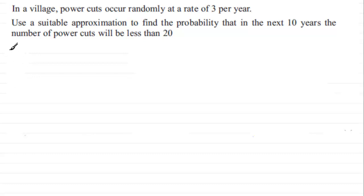Well the first thing I'd want to do is to describe the random variable, say x. Let x be the random variable, we'll put rv for short, and it's going to represent the number of power cuts per 10 years, because that's what we're looking at.